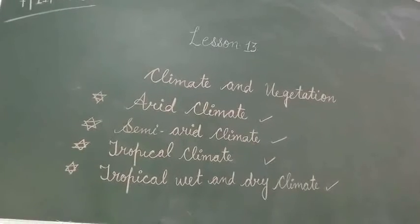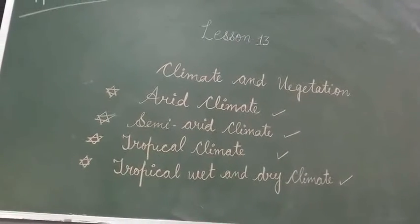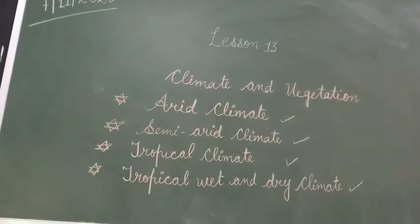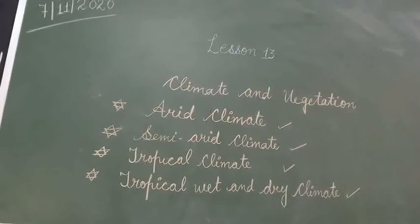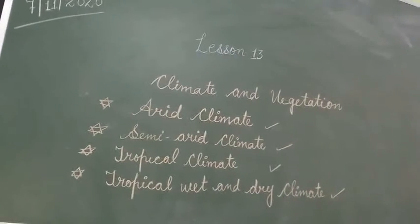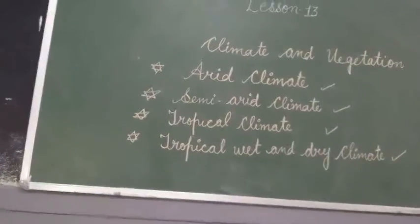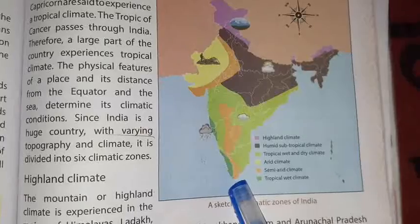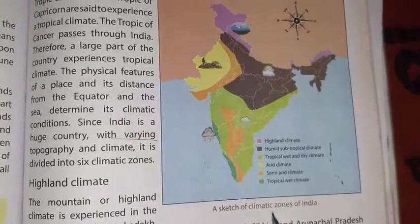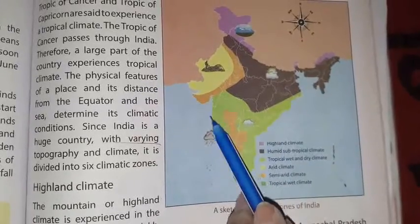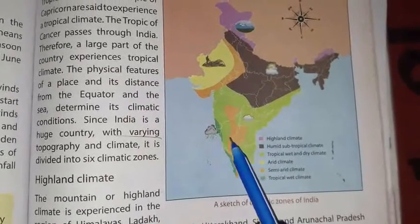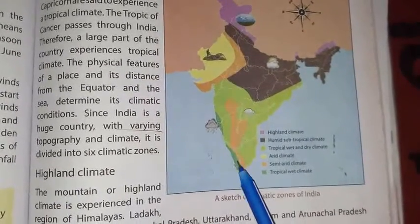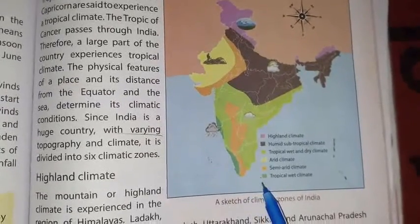Crops like Jowar and Bajra are cultivated in this region; due to less rainfall, other crops cannot be grown here. Students, see in the map on page number 130 — the light green portion is tropical wet and dry climate, and the dark green portion is tropical wet climate. Now we will know about these climates.